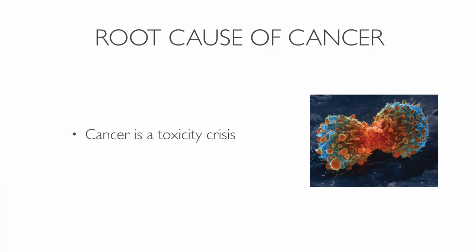An acidic and harmful environment forces defective cells to mutate. As a result, they begin to hold on to anything they can — even toxins — to survive. Cancer cells actually help your body survive a little bit longer than it would without them. They function as a sponge that absorbs some of these toxins that would otherwise kill you. Healthy cells do not plan on becoming malignant — it's just the very best thing they can do in that severe situation. Cancer cells only settle in acidic waste.